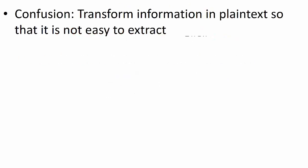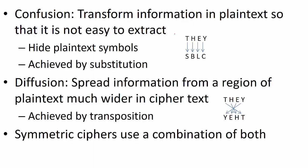Confusion is a way to transform information in plain text so that it is not easy to extract. One way to achieve confusion is via substitution — for example, changing T to S, H to B, and so on, so a given word is no longer identifiable. You are effectively hiding the plain text symbols. Diffusion is about spreading information from a region of plain text much wider in the cipher text — this is essentially transposition, shuffling the plain text so that it is not obvious what the plain text is.